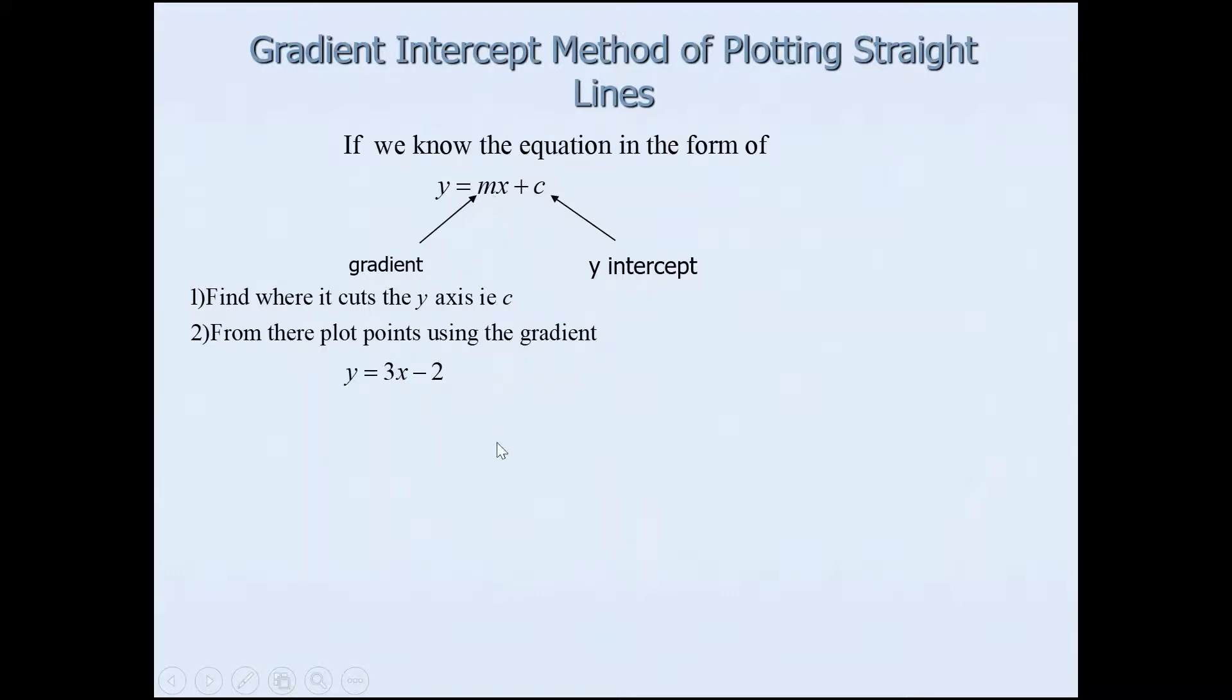So let's have a look at the first example here. It says y is equal to 3x minus 2. Of course you can use the table method that I've given earlier but I'm just going to use the gradient intercept method for this one. So you've got the grid there. So what I'm looking for is first things first. Identify the y intercept. So this is the y intercept value here. We know it's negative 2. So I will plot that negative 2.